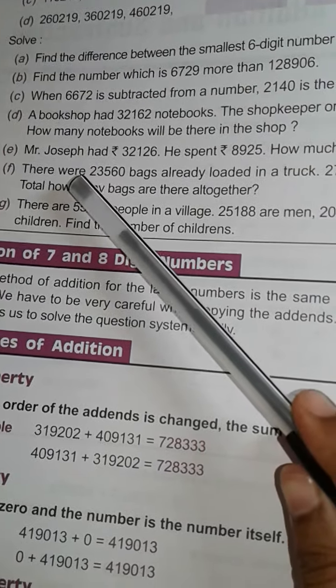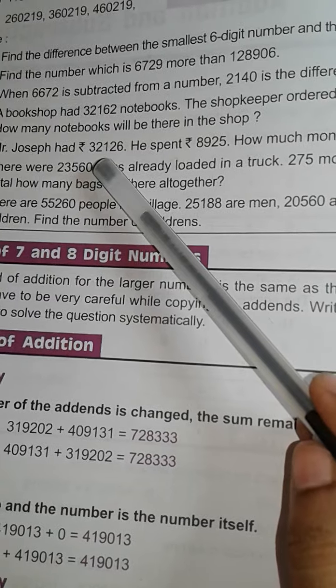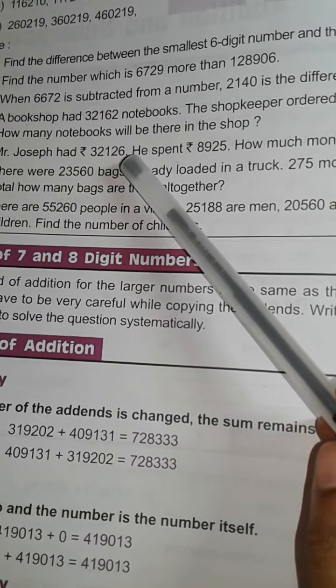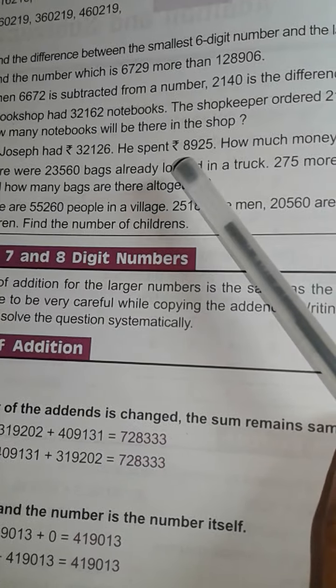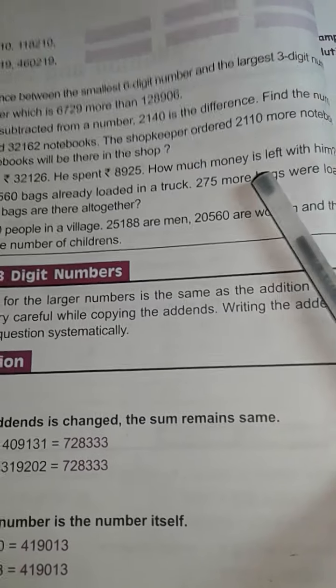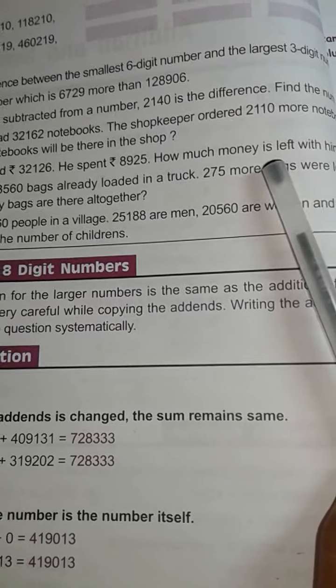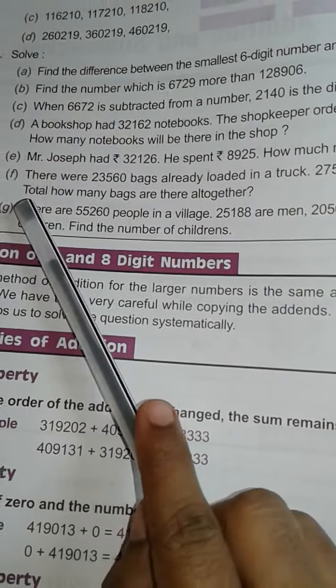Then E. Mr. Joseph had 32,126 rupees. He spent 8,925 rupees. How much money is left? Children, you know, left means you do subtraction.